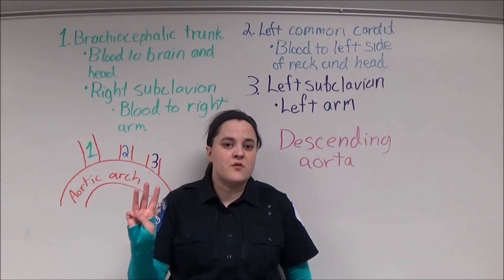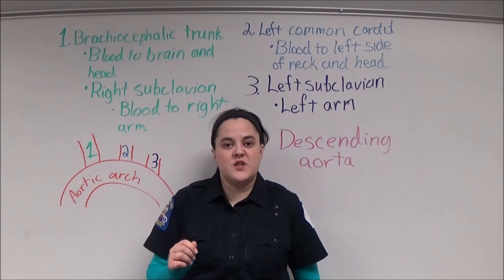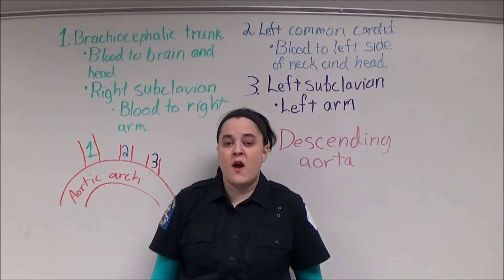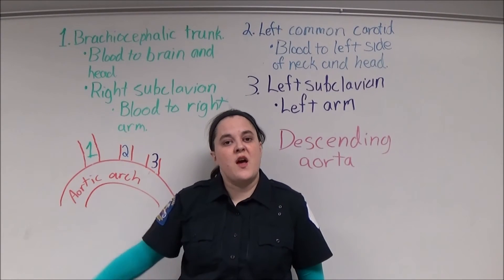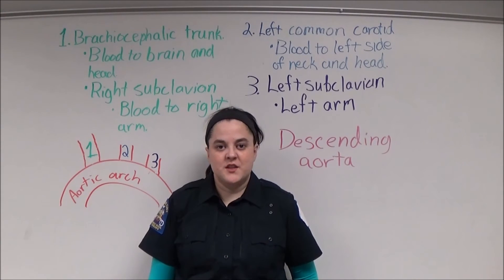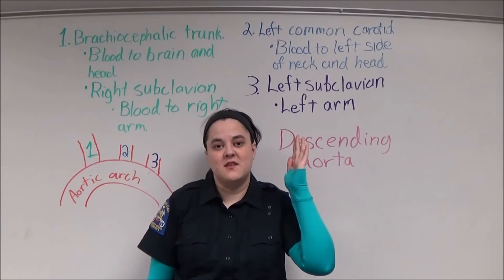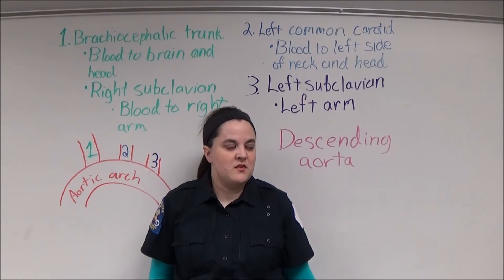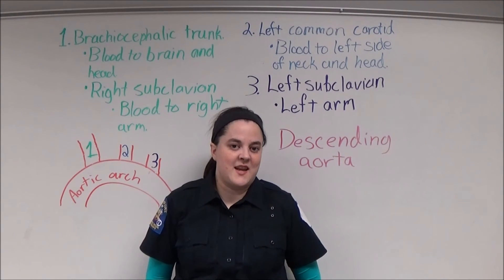There are three arteries that branch off the top of the aortic arch. The first is the brachiocephalic trunk, which supplies blood to the brain and to the head. The right subclavian artery also branches off the brachiocephalic artery, supplying blood to the right arm. The left common carotid artery supplies blood to the left half of the neck and left half of the face. The left subclavian artery supplies blood to the left arm. The lower extremities are supplied with blood from the descending aorta.